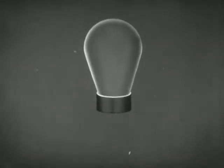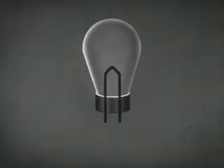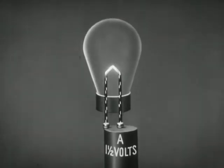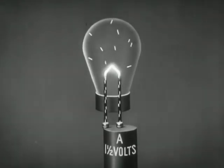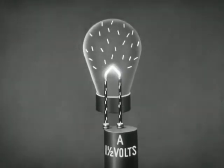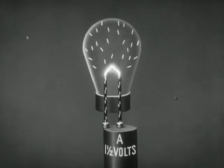First let us consider how a three element vacuum tube, the triode, operates. A tungsten filament extends into a tube such as this. A cell supplies a current which heats the filament. When the filament gets hot enough, electrons are emitted. The electrons build up a space charge in the tube. As the charge builds up, electrons are repelled back to the filament and finally as many return as leave.